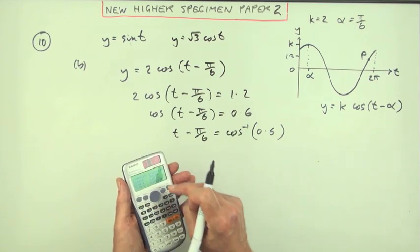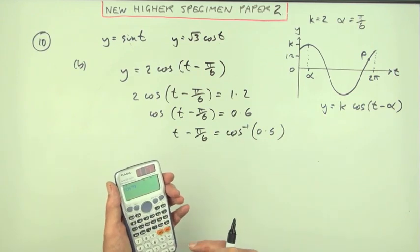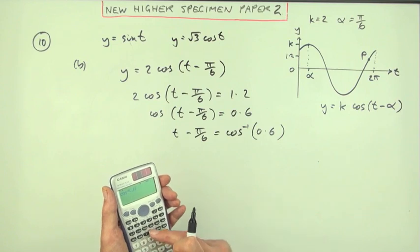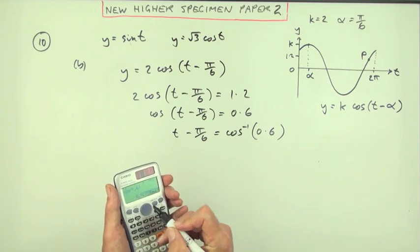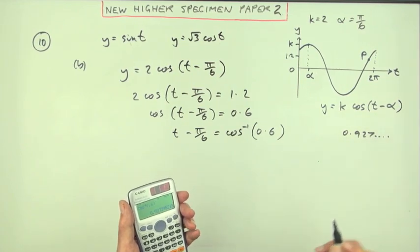If you've got this type of calculator, shift set up, and there it is, 4. Press 4 and it puts it into radian mode. Now you can just do inverse cos of 0.6, and it will give you the answer 0.927 etc. I'll just put it over here: 0.927 and so on.